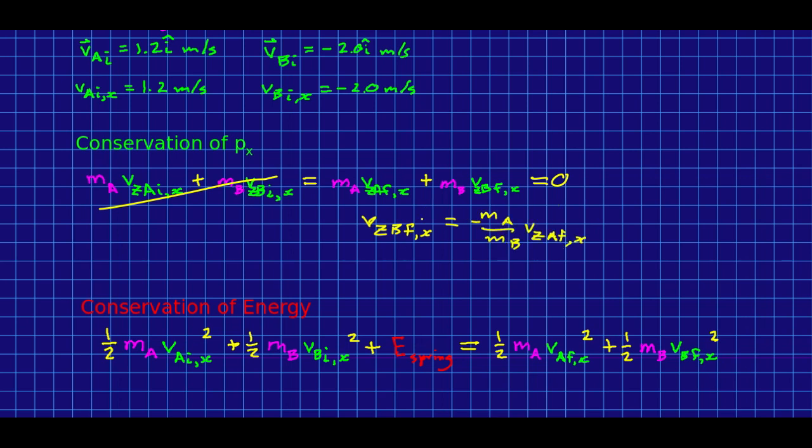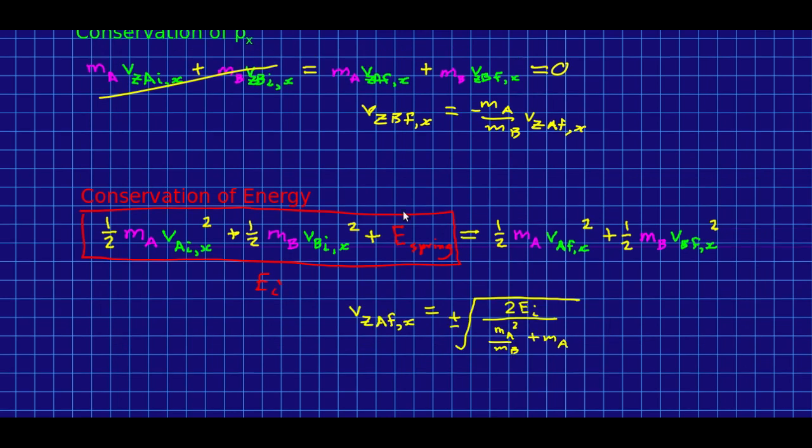And we could solve for, say, vZBfx. I know a lot of subscripts, but whatever. And it would just be... And that now gives us something much, much simpler that we can substitute into our conservation of energy and solve. If you do that, then you can just call this whole initial energy Ei. We know everything in here. We can just calculate that. It's a number we can get. And I'll encourage you to work through just doing that substitution and solving for vZAfx. And it comes out to this, which is not too bad at all.